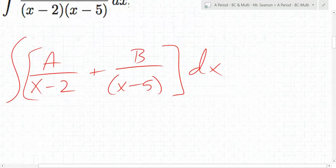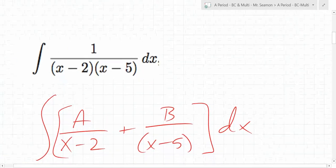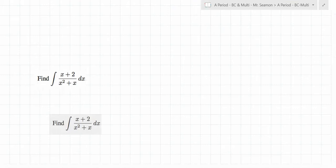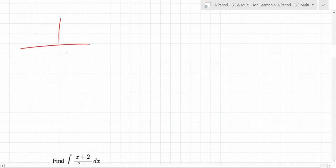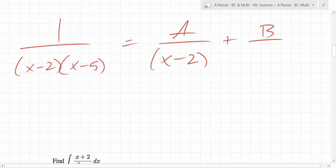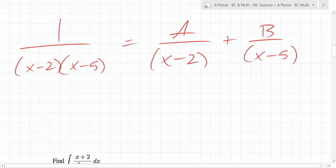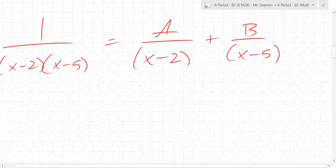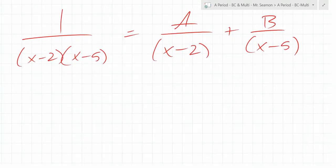So this problem right here that we're going to do, this one right here, we need to answer this question. One over x minus two times x minus five is equal to A over x minus two plus B over x minus five. We need to answer that question. If we can answer that question, we are home free. We get to something that we know how to integrate directly just by looking at it and knowing what the integral is.